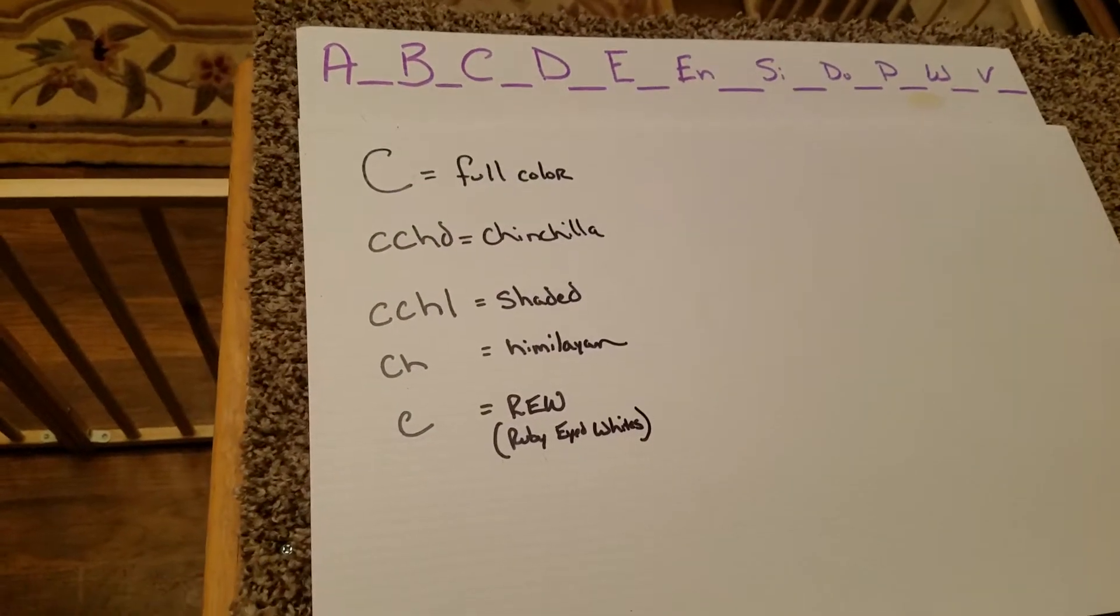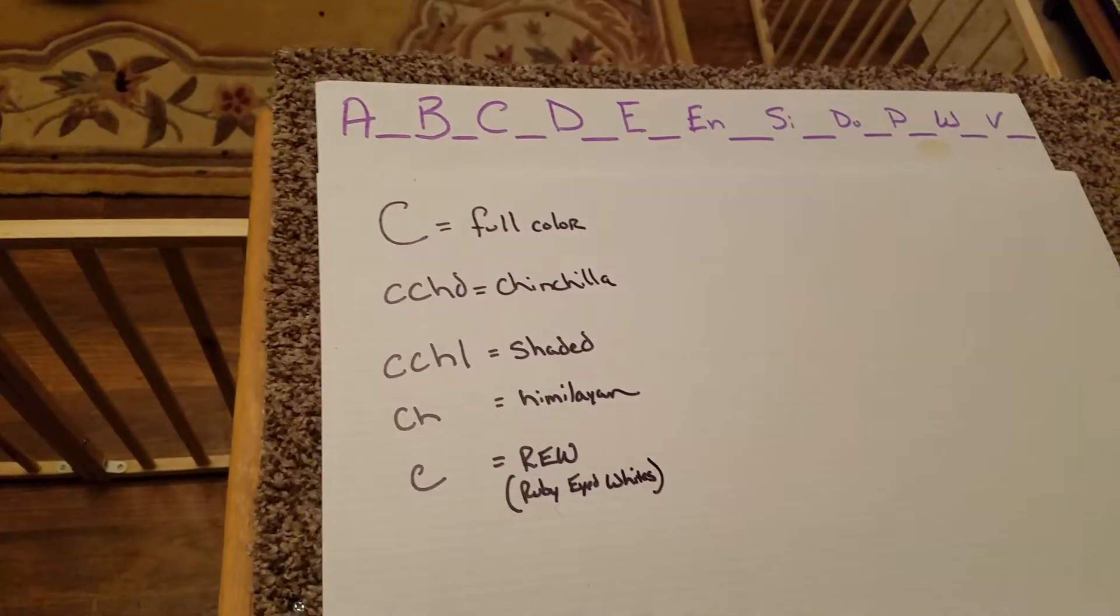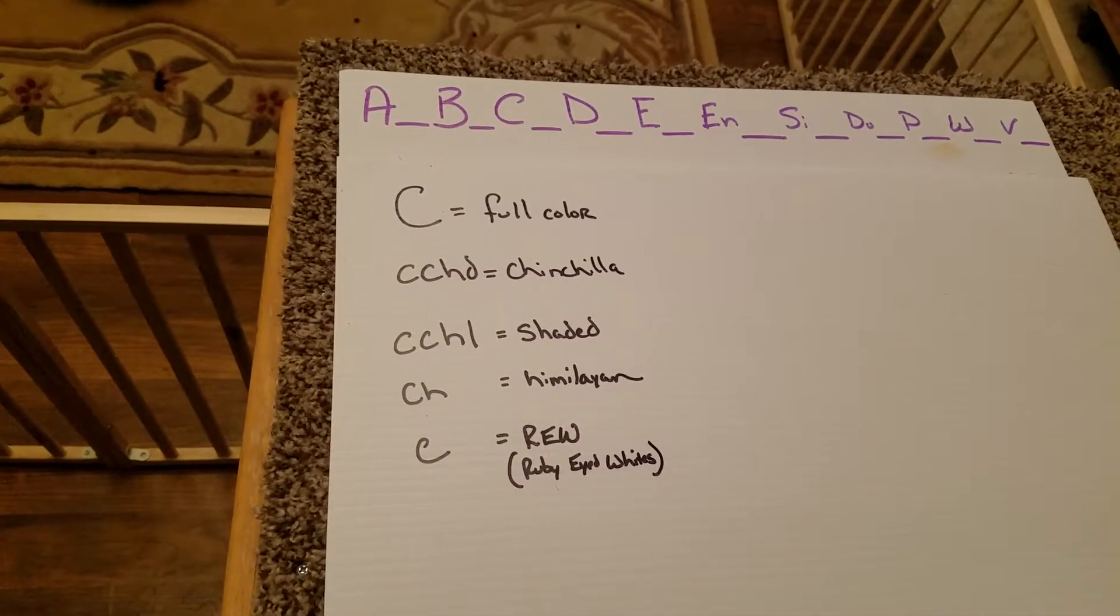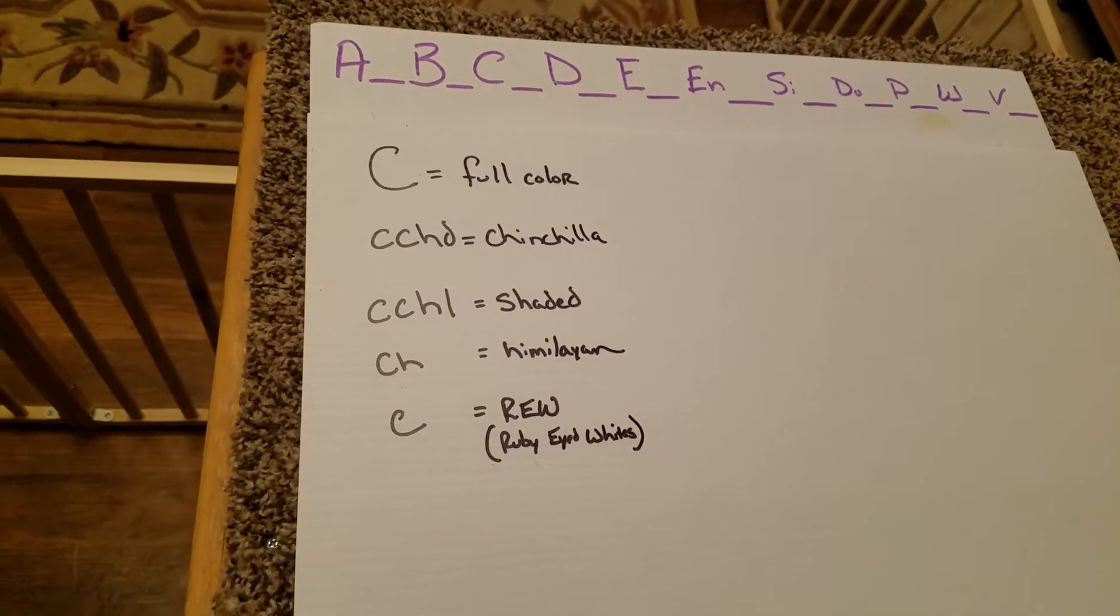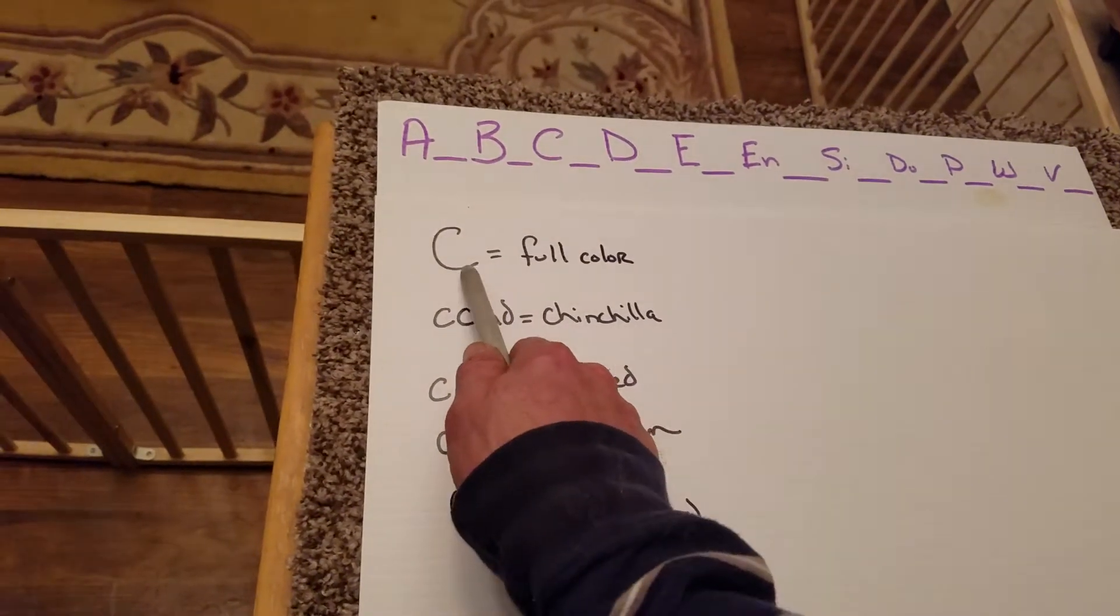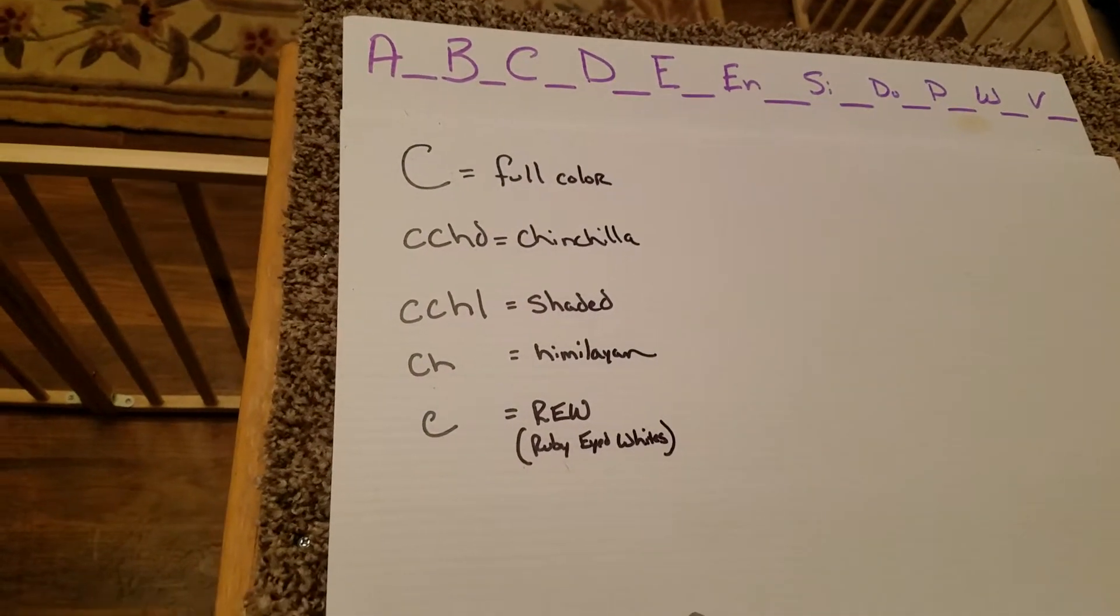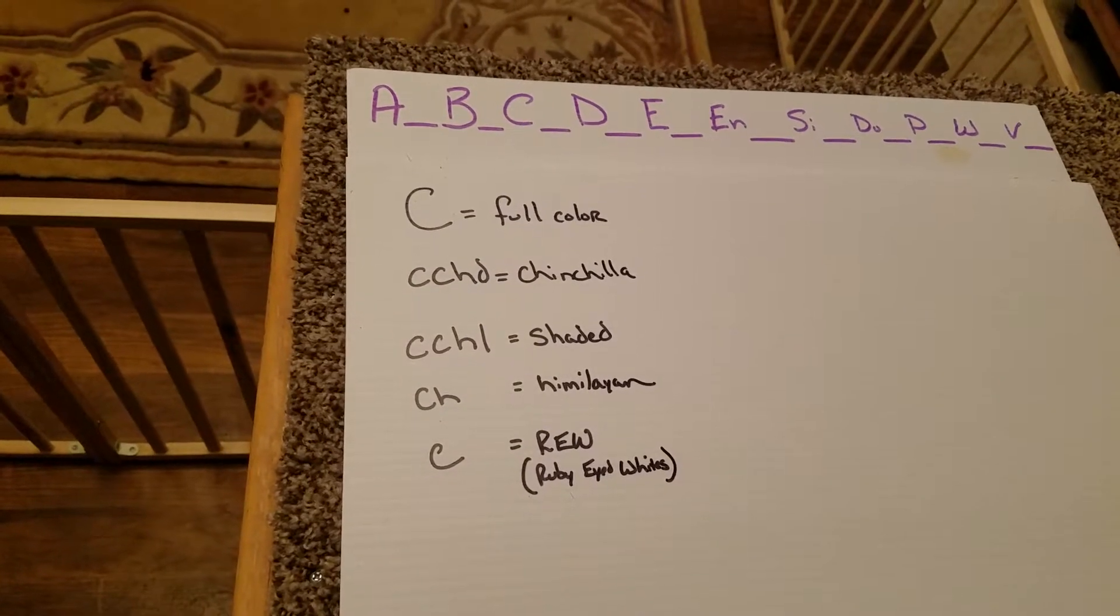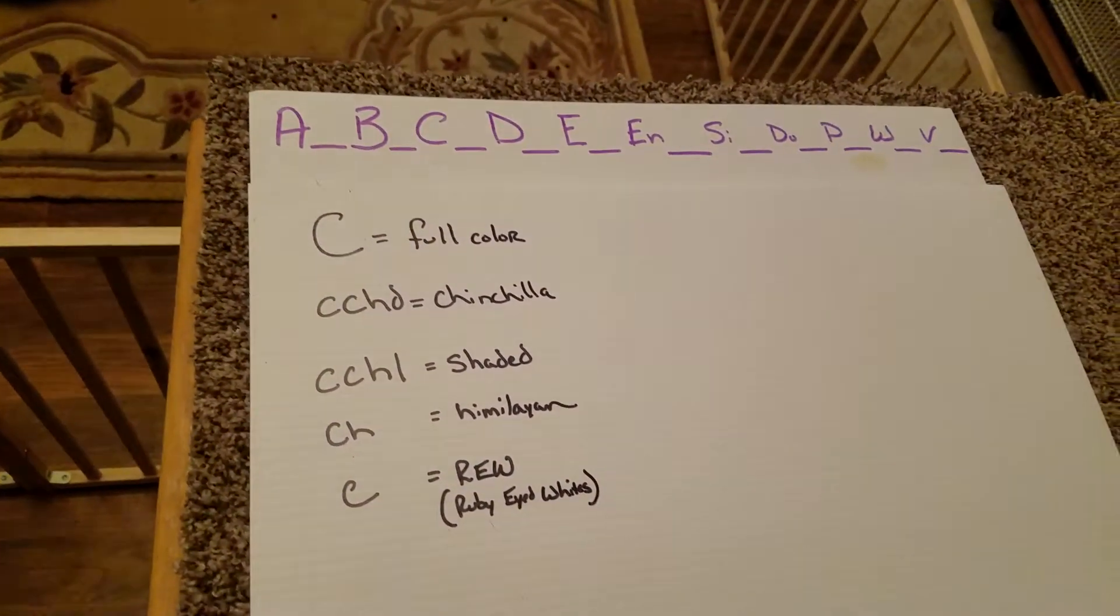Full color, that's going to be basically there's no modification that takes place at this particular locus point. You're going to see a capital C in your blacks, in your black otters, your chestnuts. Those are all going to be full color with a capital C at this locus point.